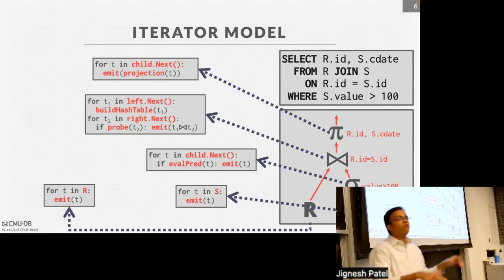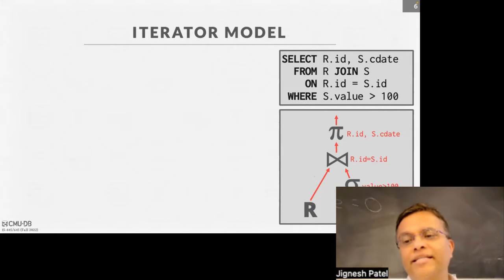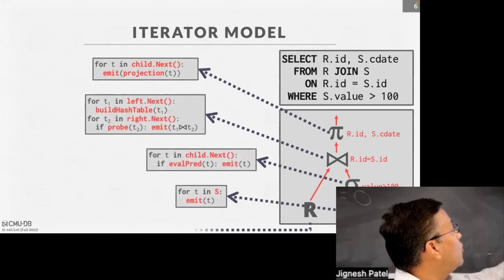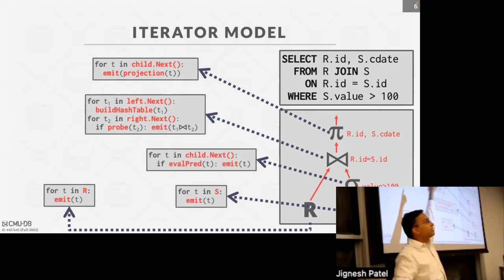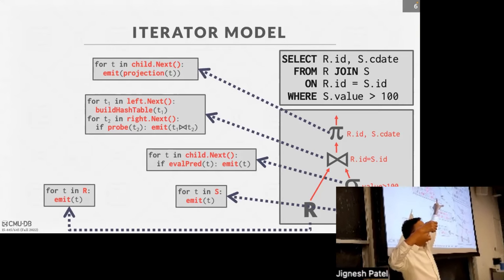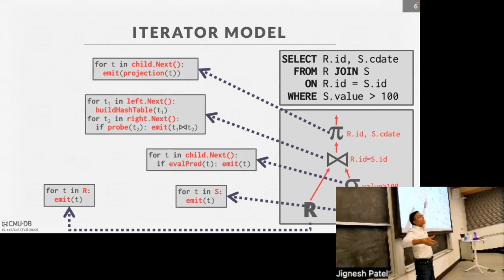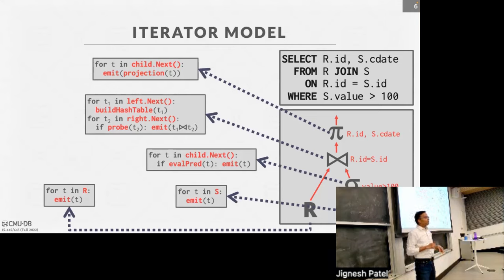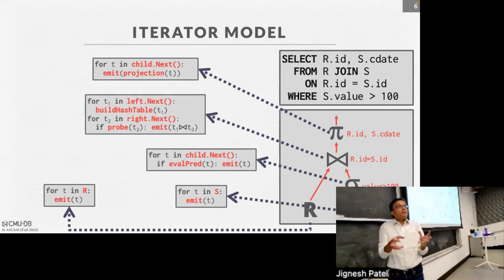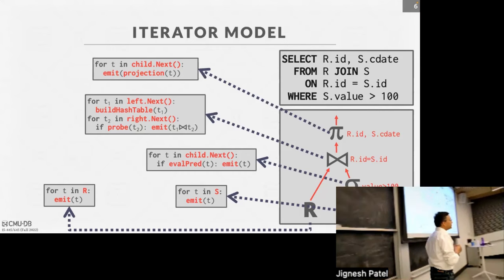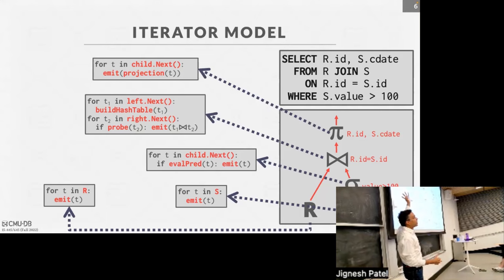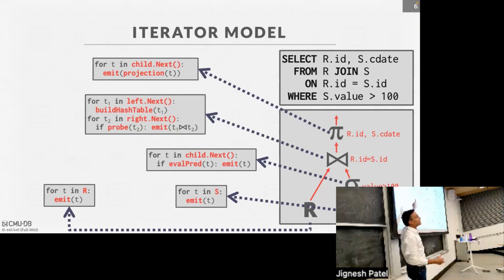The code shown is the implementation of the next function — open happened implicitly as the boxes opened and pointers were set up. Close will tear things down — any allocated intermediate structures get removed. Operators are typically written as classes; you call the destructor or a separate close function. In streaming environments, sometimes you keep the operators around forever with state preserved. The open set up all the pointer connections so the tree is ready to execute.